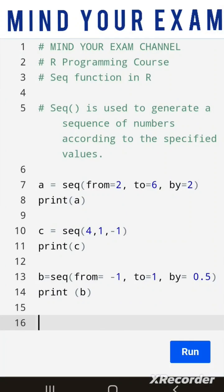The seq function in R is used to generate a sequence of numbers depending on the values that are specified in its arguments. It takes three values as its argument.